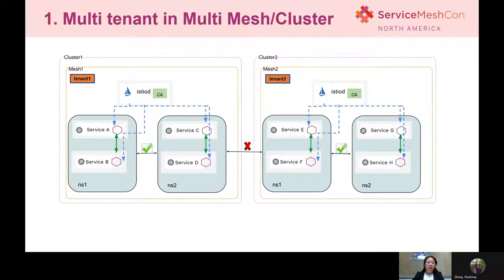If we want to support multi-tenancy in Service Mesh, the straightforward way is to make sure every tenant has their own mesh and own cluster. In this way, all isolation is achieved natively because they are running in different clusters. But as we mentioned, in edge computing scenarios, resource is very limited, so it's often impossible to give every tenant their own mesh or cluster.